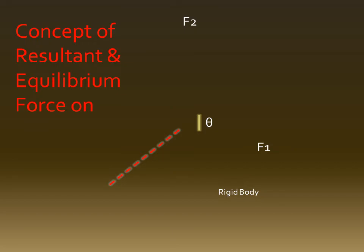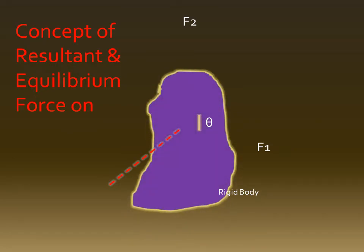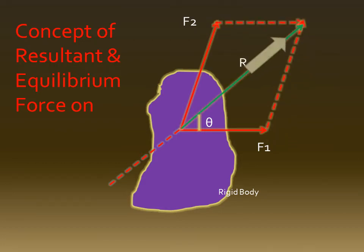Suppose two forces F1 and F2 are acting on a rigid body — F1 in the right direction and F2 in the upward direction. The combined effect of F1 and F2 is given by a single force called the resultant, which lies between F1 and F2. The direction of the resultant is in the upward direction.